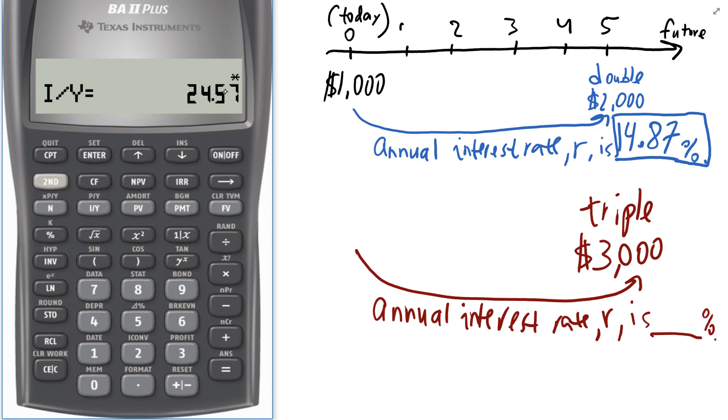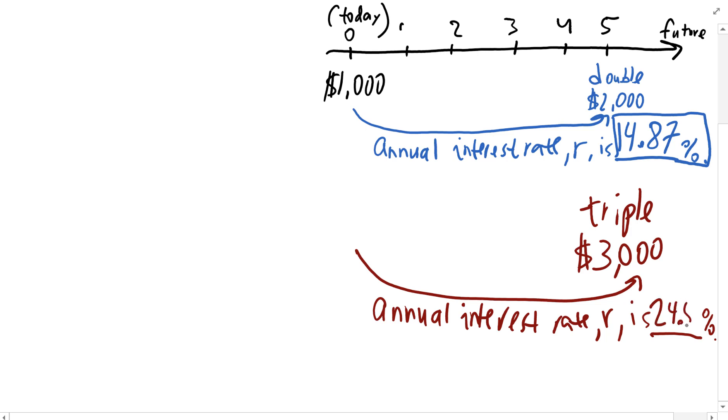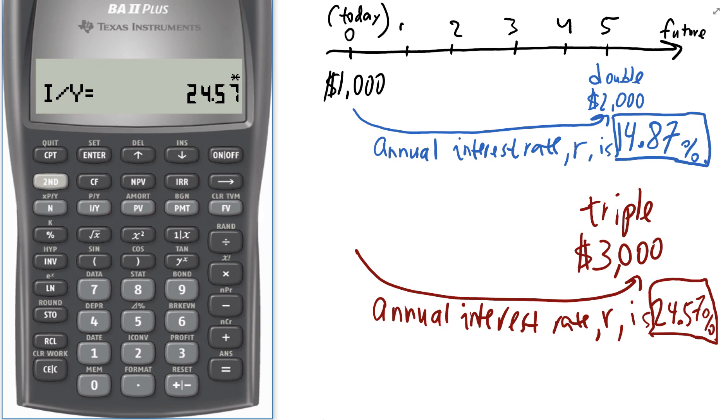Compute I/Y. 24.57% every year. So 24.57%. This is the required interest rate for the money to triple. And by the way,